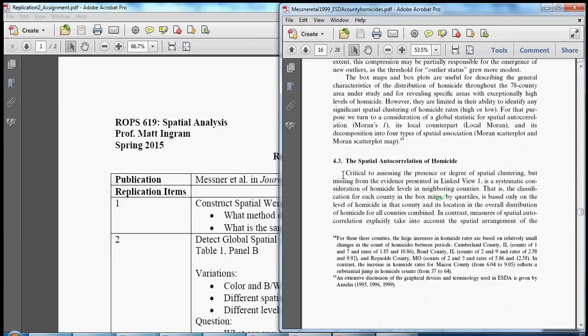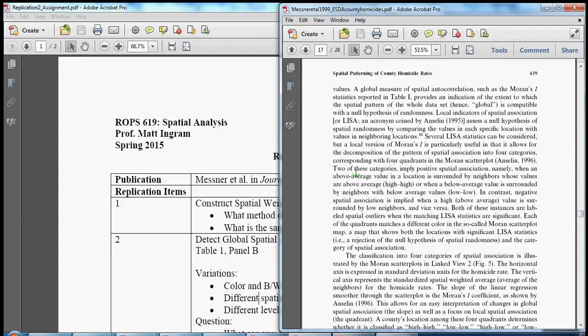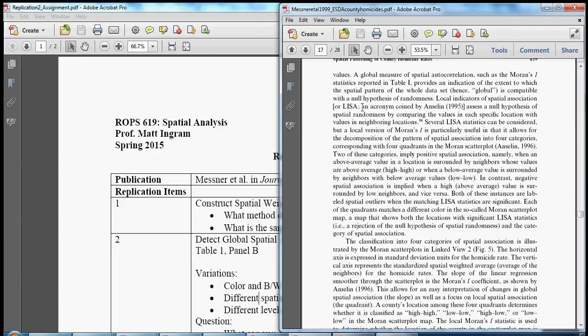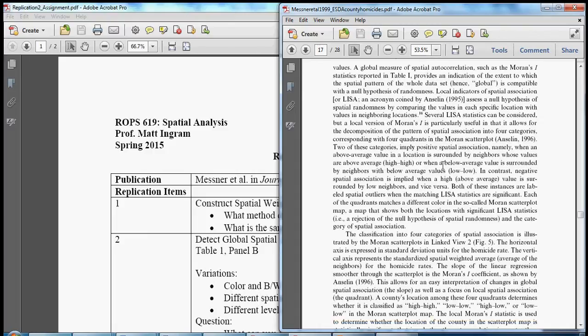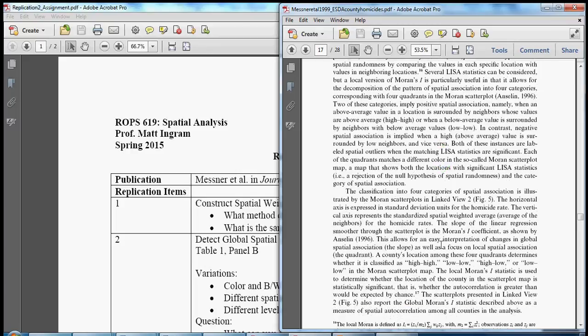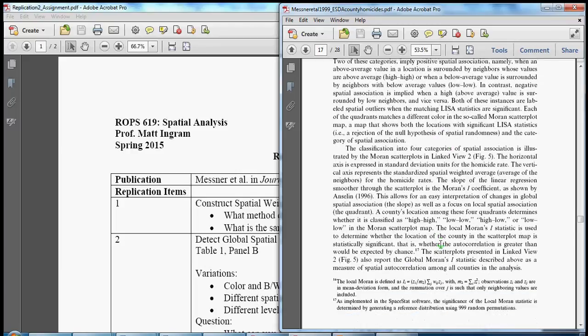So this section 4.3 and the results should be a nice refresher discussing spatial dependence, spatial autocorrelation, the notion of local indicators, why LISA statistics or local versions of Moran's I are particularly useful, and how we go about interpreting LISA maps, LISA cluster maps.